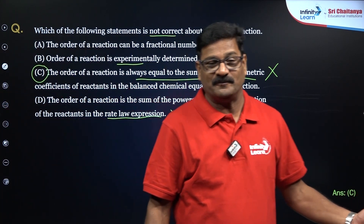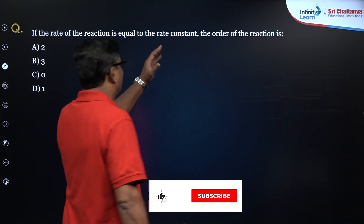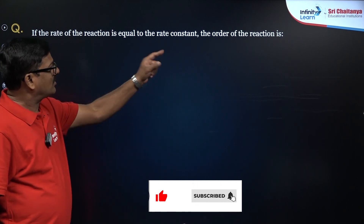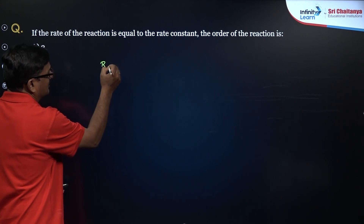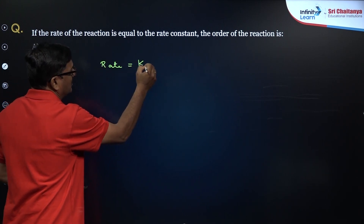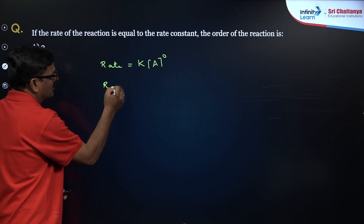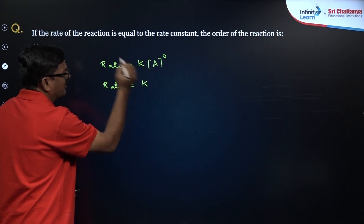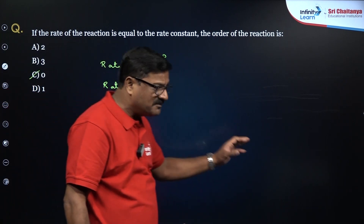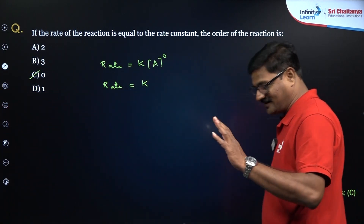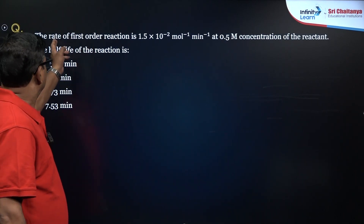MCQ: When the rate of a reaction is equal to the rate constant, the order of reaction is zero. For zero order reaction, rate = k[A]^0 = k, so the dimension of rate equals the dimension of rate constant k. This is a straightforward zero order reaction answer.